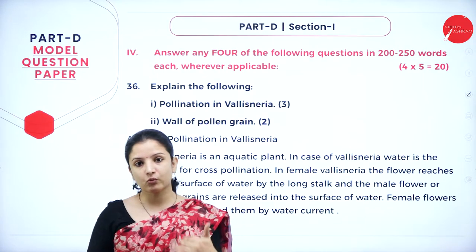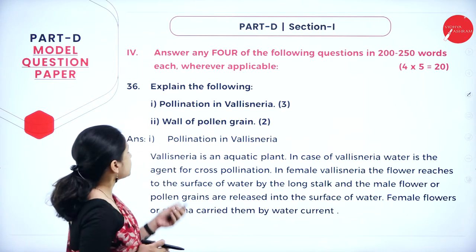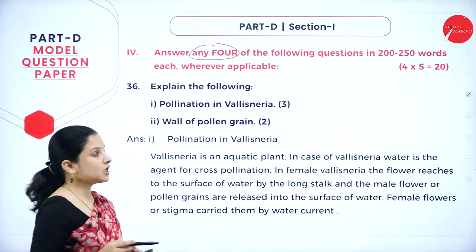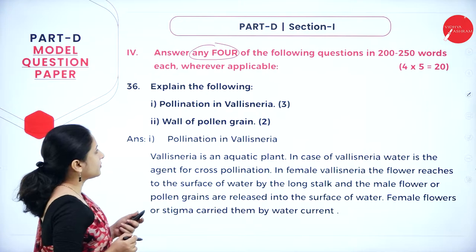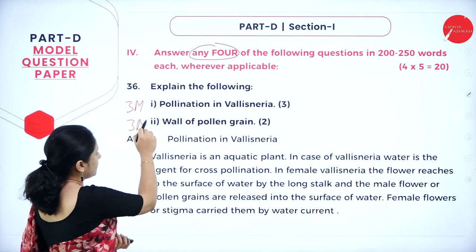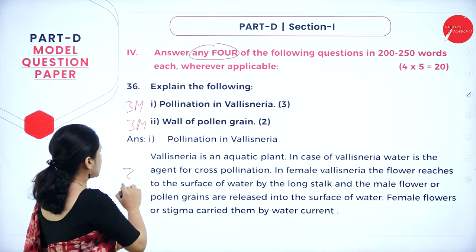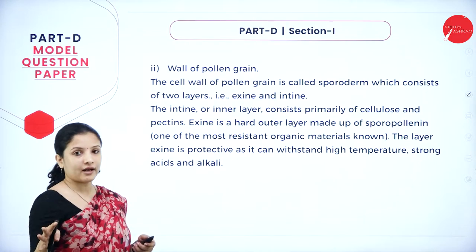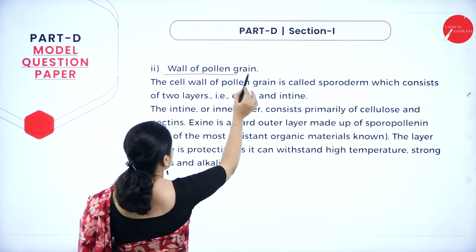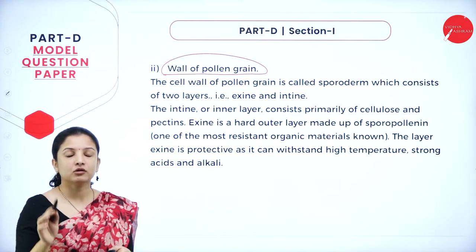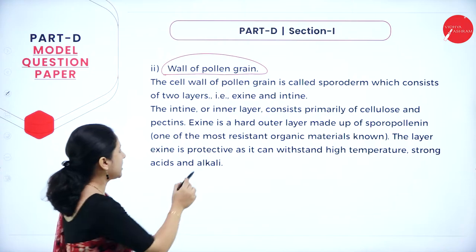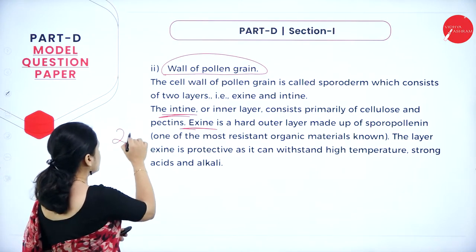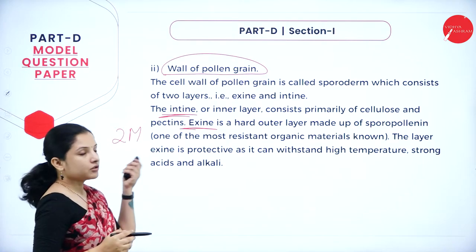Moving on to Part D, which is divided into Section 1 and Section 2, each carrying five marks. Answers should be 200 to 250 words. In Section 1, eight questions are given and you answer any four. The first question asks you to explain pollination in Valisneria — three marks — and the wall of the pollen grain — two marks, totaling five. For the wall of the pollen grain, concentrate specifically on writing about the hard exine layer and the inner intine layer.